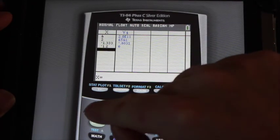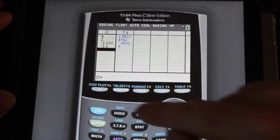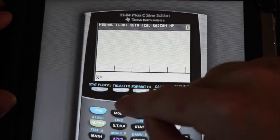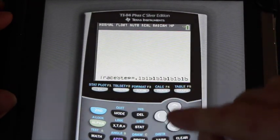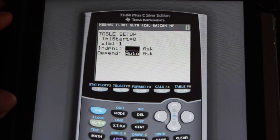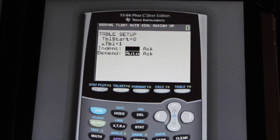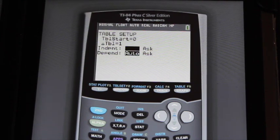Now, when you're done this problem, once you've answered it, please go back into table set and turn that independent back to auto because you'll want that to look like that for later on. Good luck.